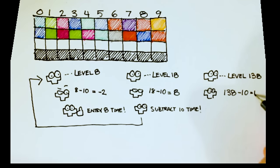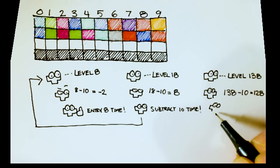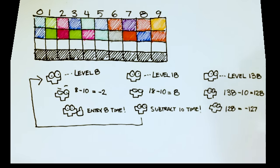So when the game subtracts 10 from 138 and sees that the result is 128, I think that's actually negative 127, and so it assumes that the current level 138 must be less than 10.